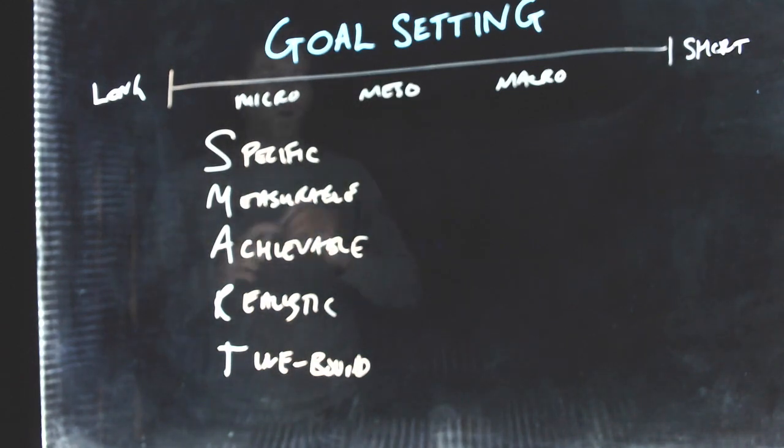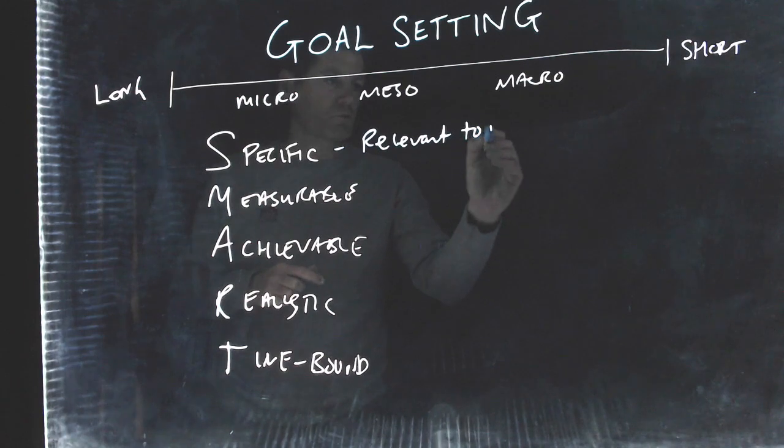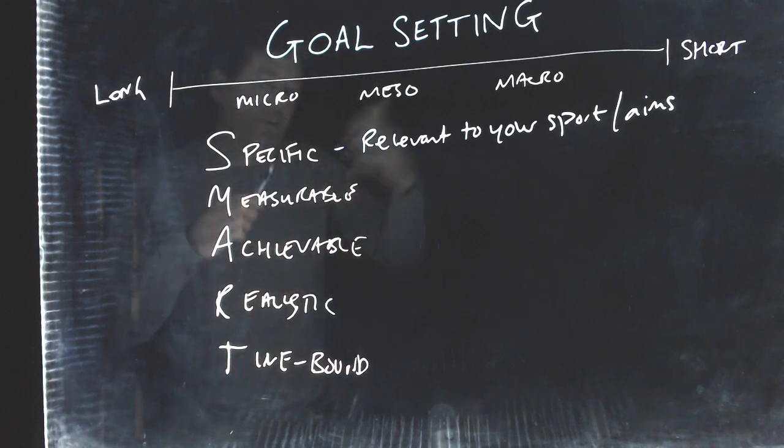So when you set a specific goal, you've heard the term specificity in the team, you set a goal that is very relevant to your sport. So it's relevant to your sport and it's relevant to your aims, what you want to get out of that sport. So a specific goal might be something like, I want to finish at the top of the league. I want my team to finish at the top of the league or I want to finish at the top of the athletics league. So you're setting yourself a very specific goal in order to achieve it.